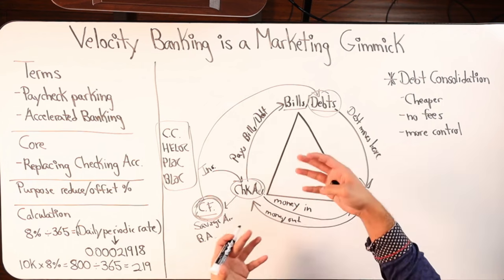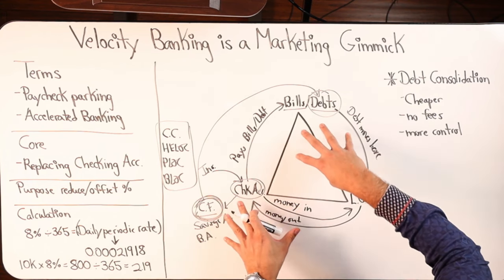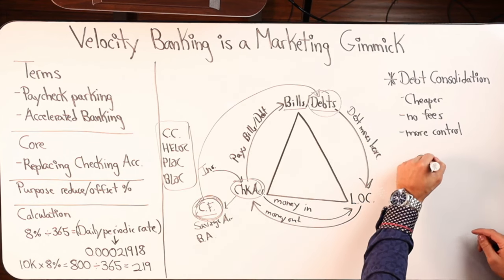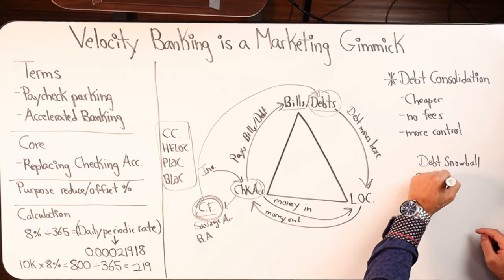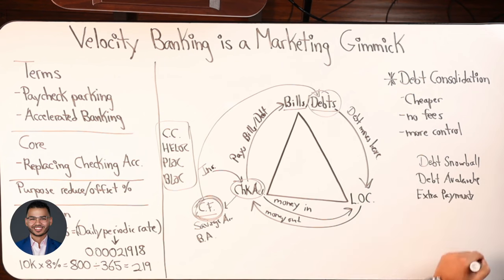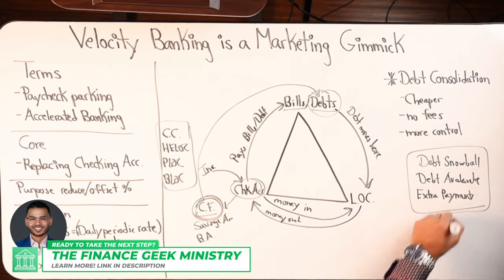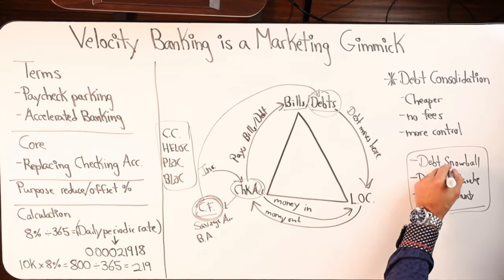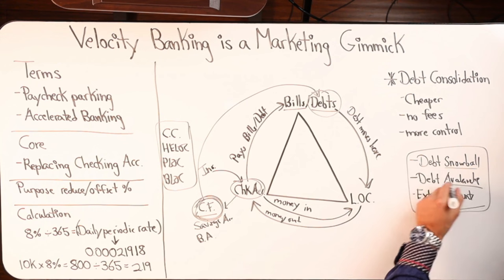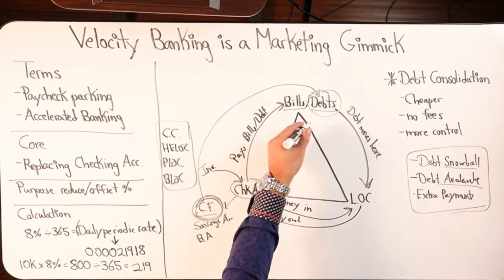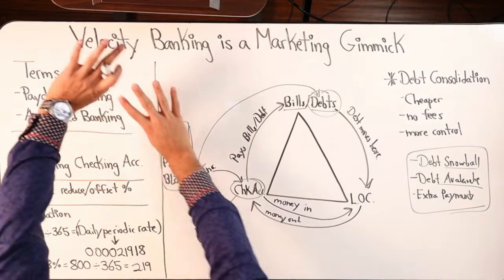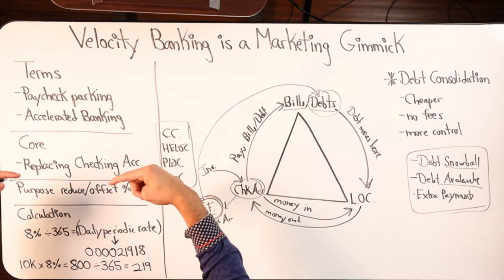This model — make money, spend money, have cash flow, extra cash flow pays off debt — is the traditional model of eliminating debt. That model also has marketing terms: they're called debt snowball, debt avalanche, and extra payments. These are marketing gimmicks that attract eyeballs, but it's exactly what I just explained — very simple.